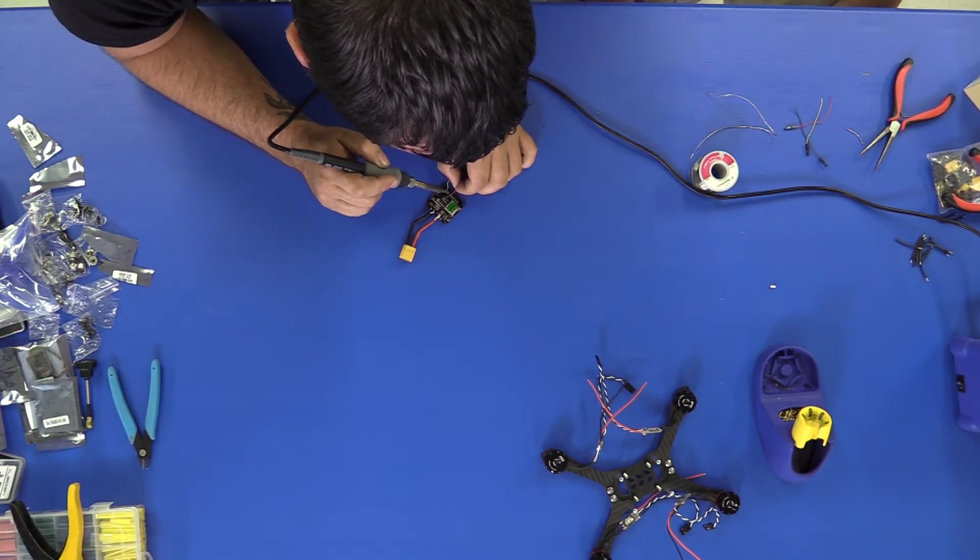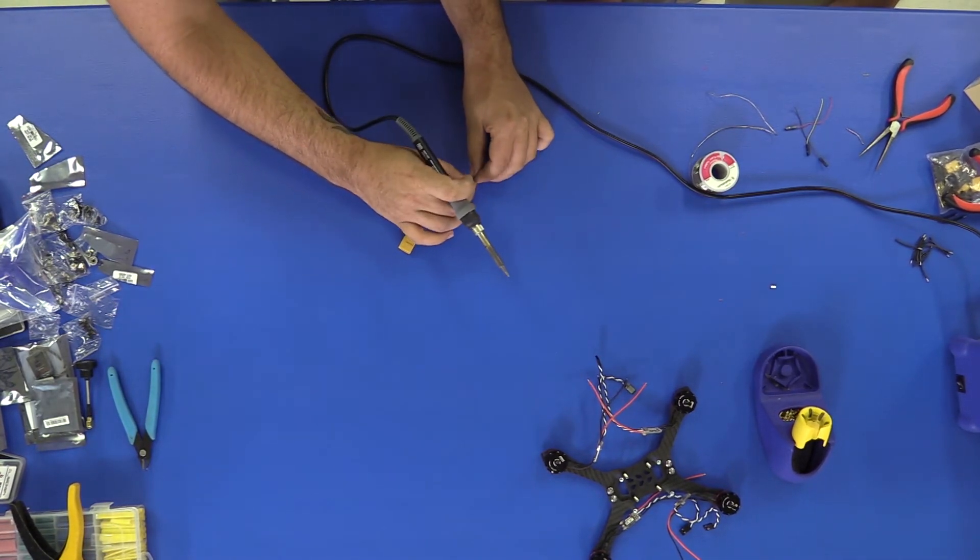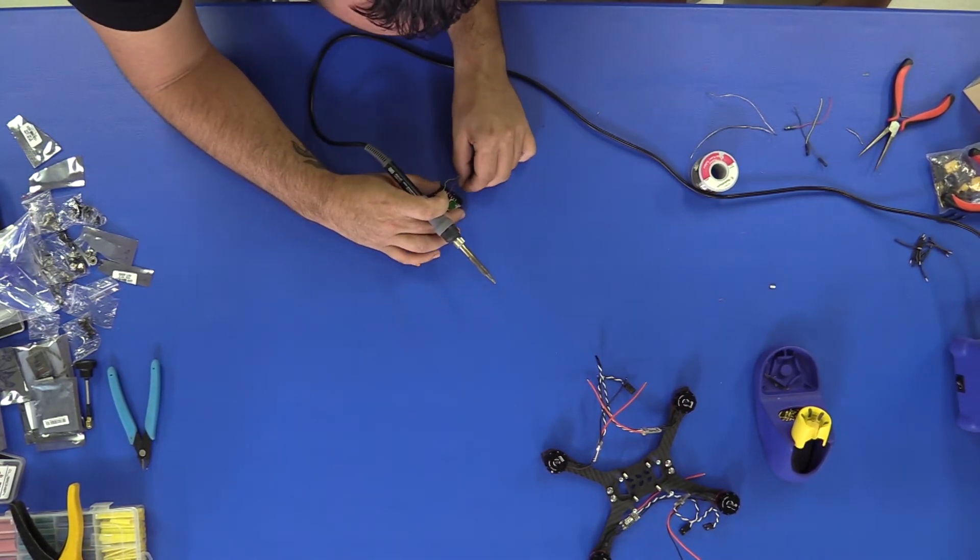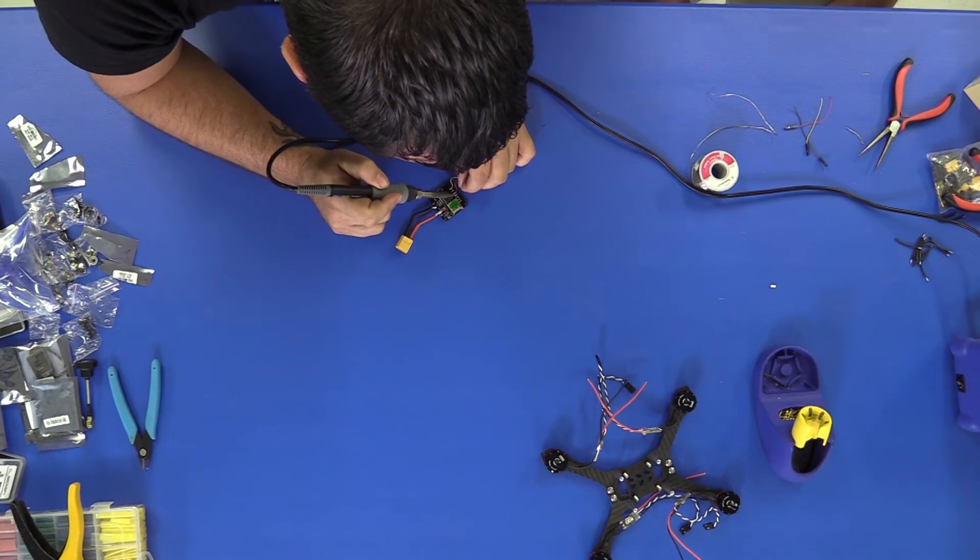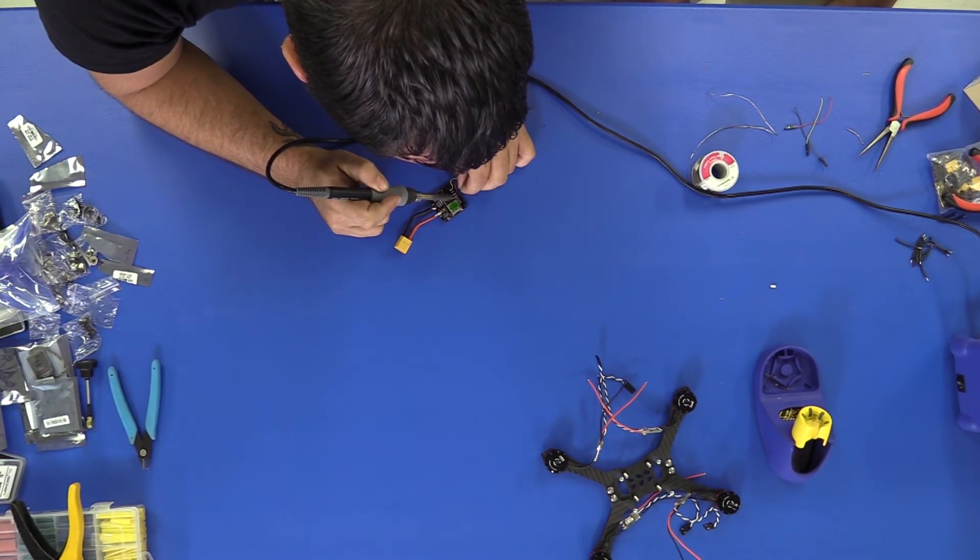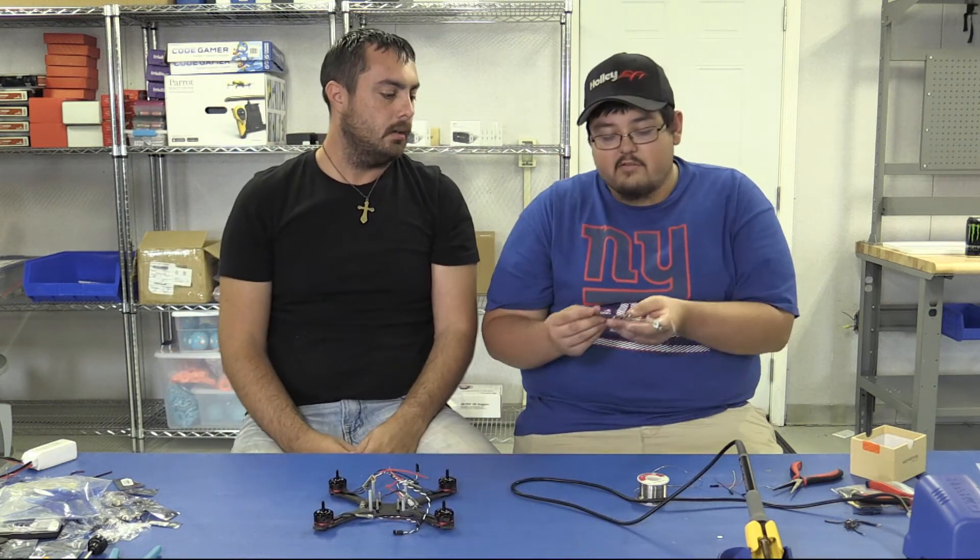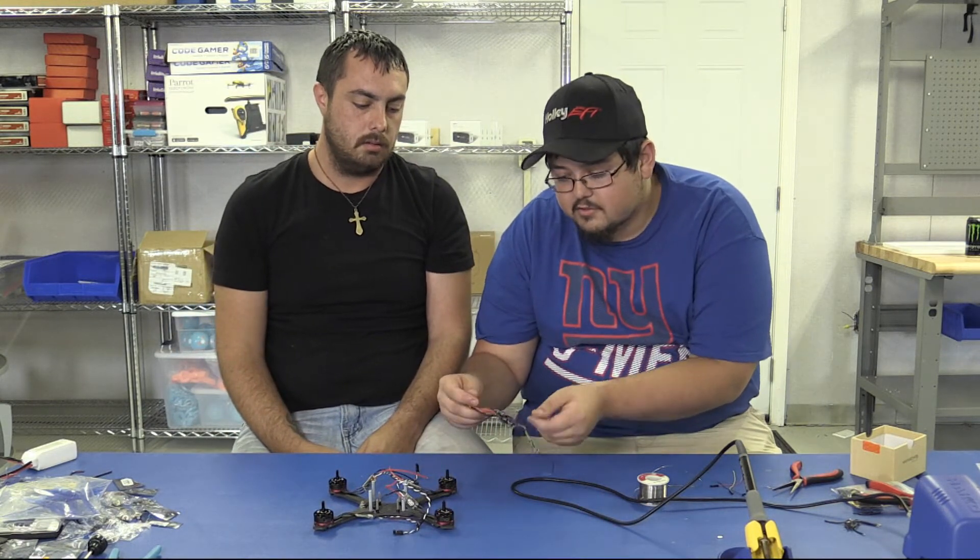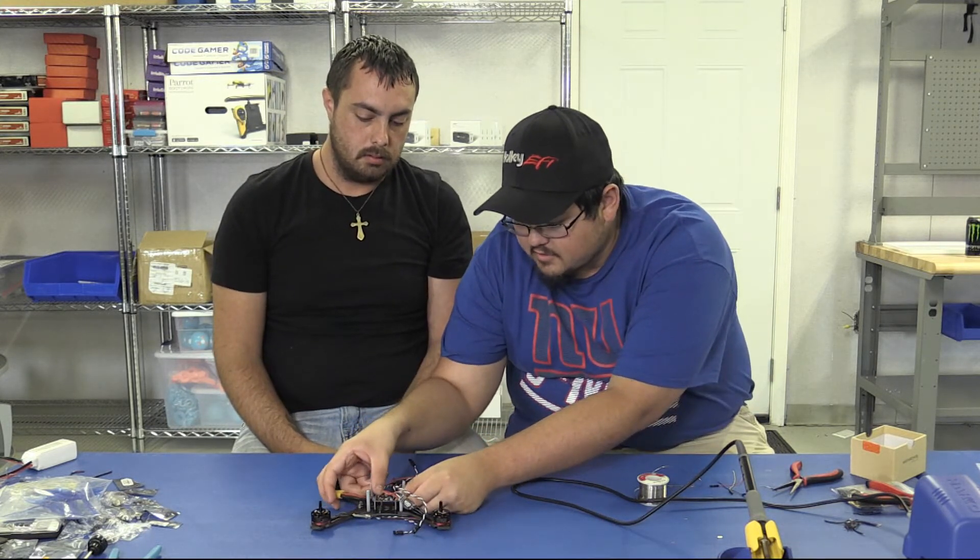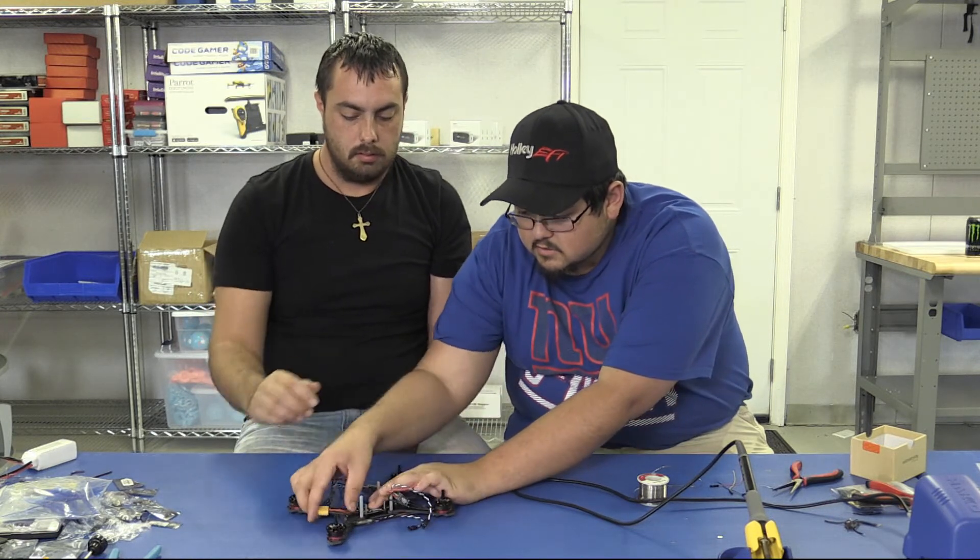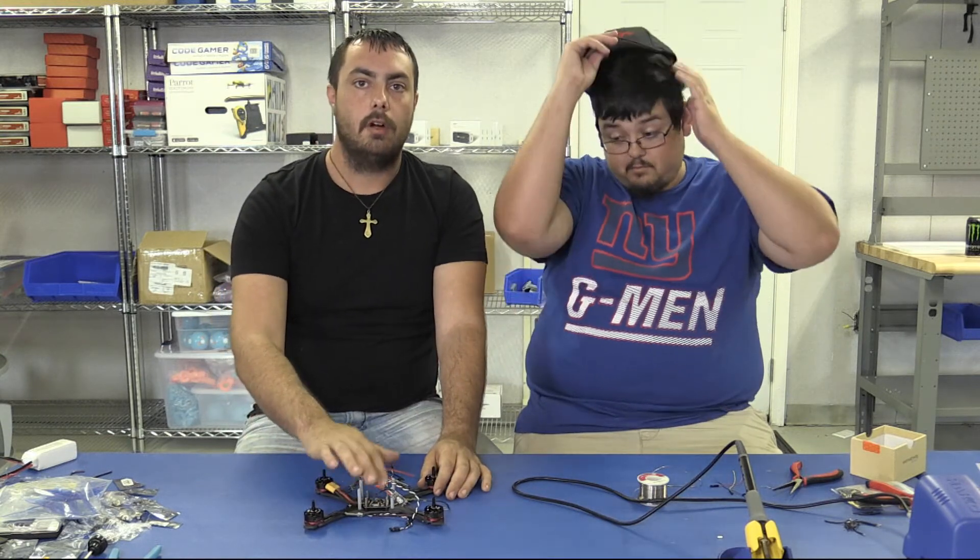Last, we're going to do our ground. Give it a slight tug. Now that we have everything on the bottom side finished, we can go ahead and place the board onto the copter. It just slides over the standoffs like so. Make sure your arrow is facing the front of the quadcopter.